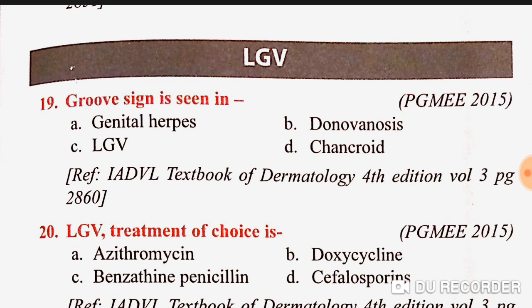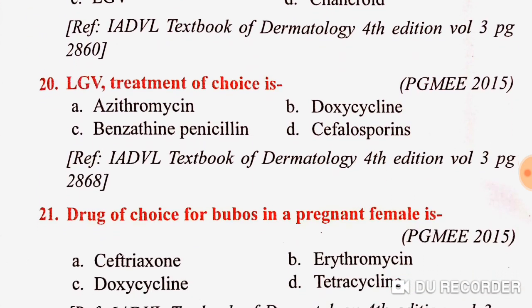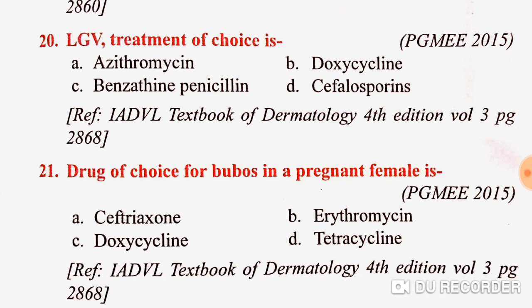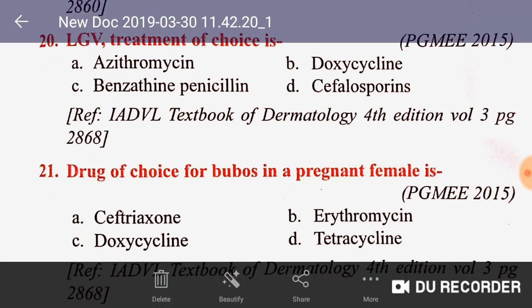How to remember groove sign — please remember it. Now question 20: the treatment of choice for LGV, lymphogranuloma venereum. The treatment of choice is doxycycline. In a lot of books there is azithromycin, but on Wikipedia they give azithromycin while in books it is doxycycline.